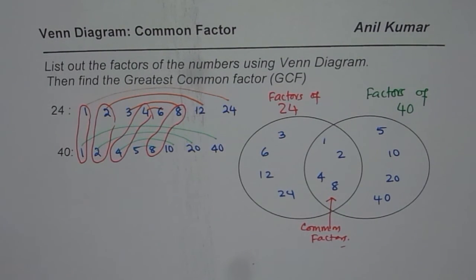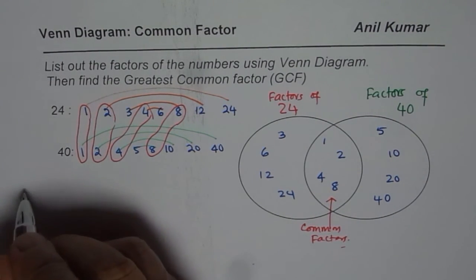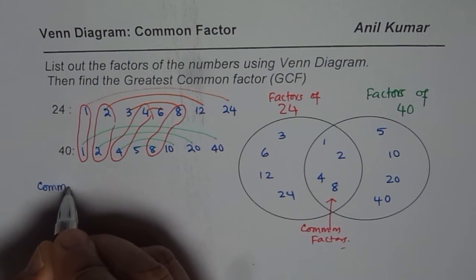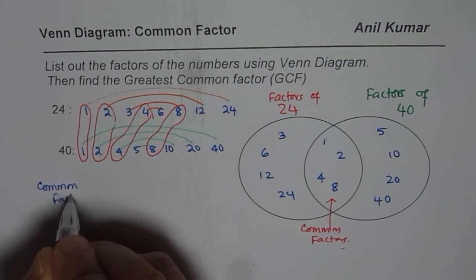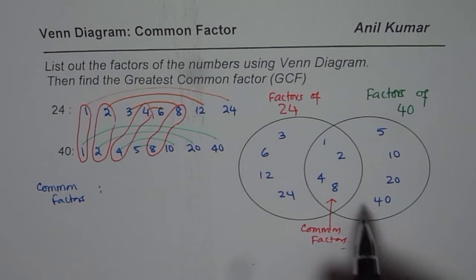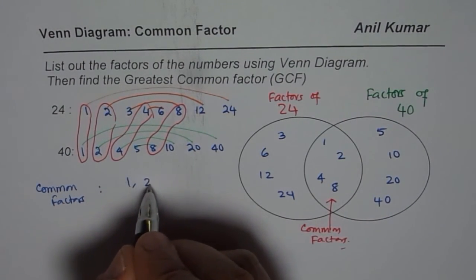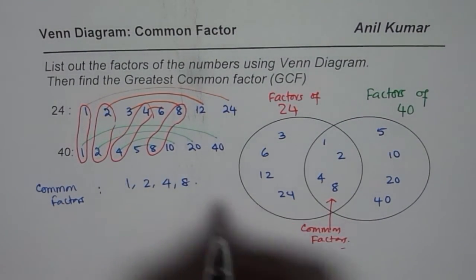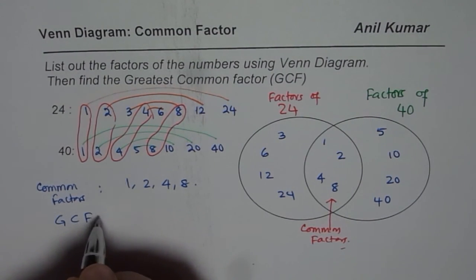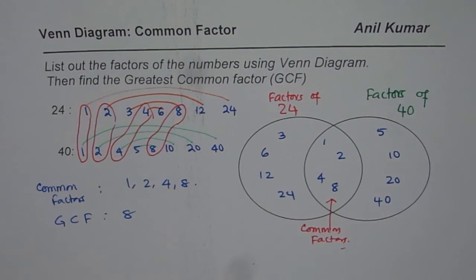So now we can list them. We say common factors are 1, 2, 4 and 8. Out of which greatest common factor is 8.